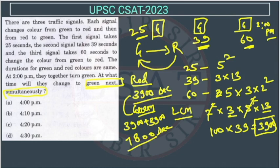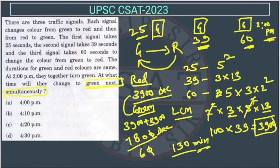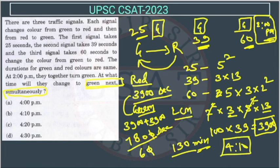The question is asking after what time, so we convert to minutes by dividing by 60. The zeros cancel and we get 130 minutes. 130 minutes means 120 minutes is 2 hours, and the remaining 10 minutes — so starting at 2 PM they turn green again at 4:10 PM. So the answer is option B.